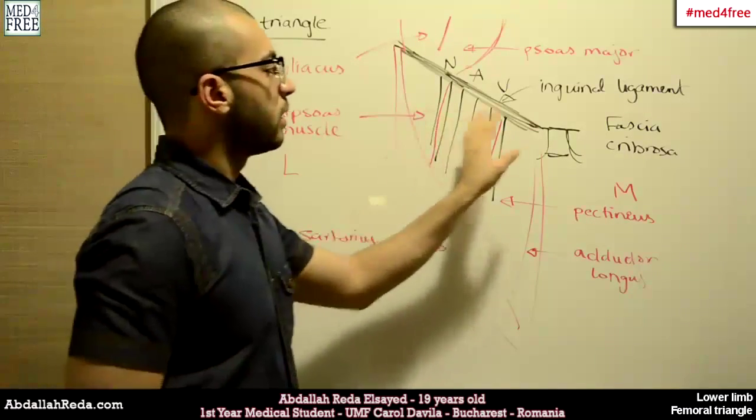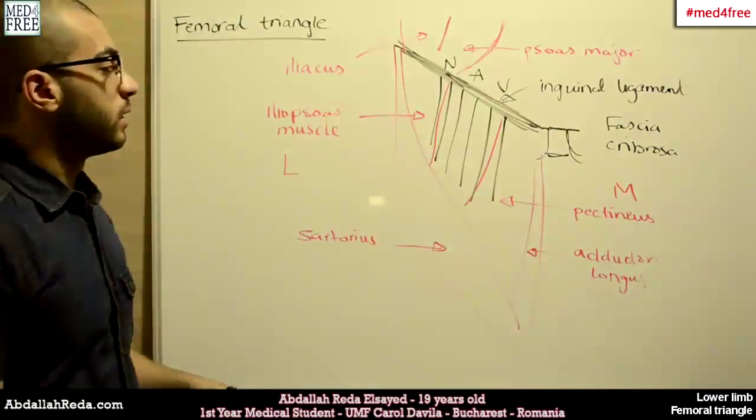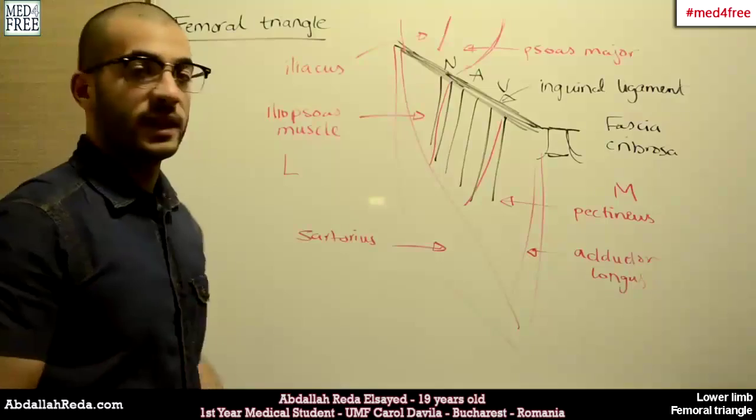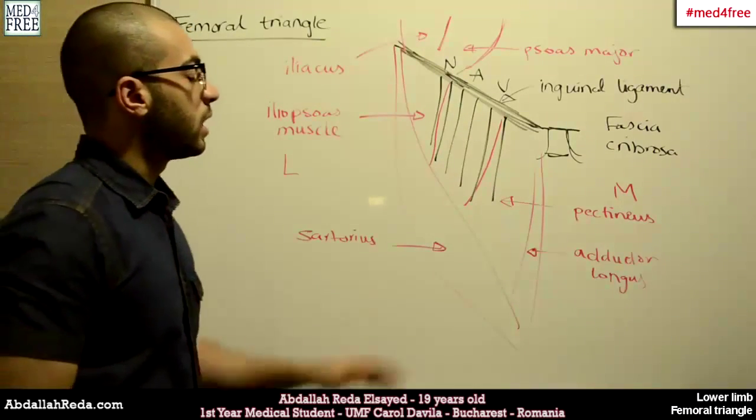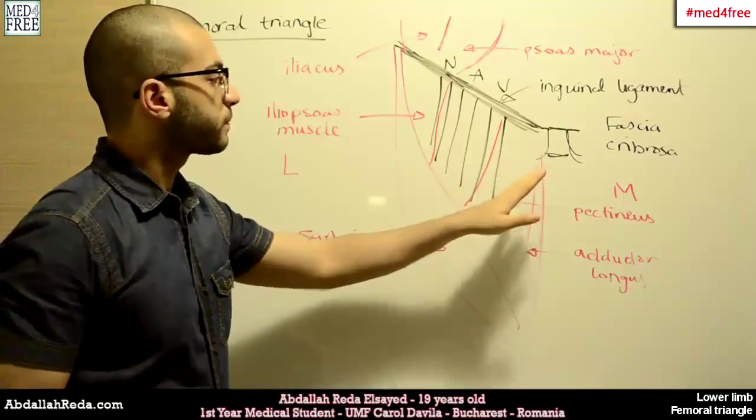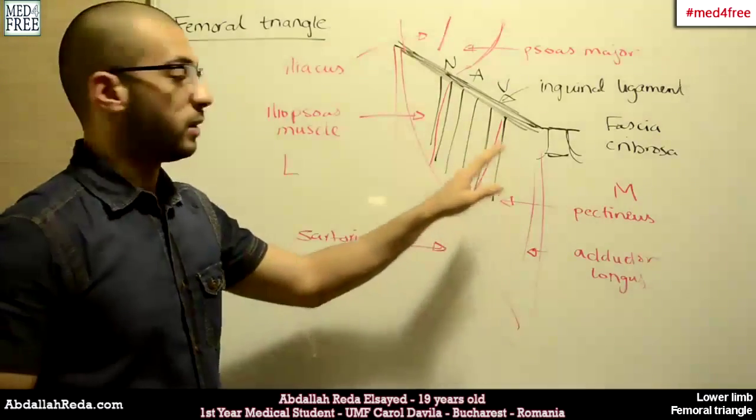Superficially, or superficial to the fascia cribrosa, we have the superficial epigastric artery, the superficial circumflex iliac artery, and we have the superficial inguinal lymph nodes. Also, we have the external pudendal arteries.